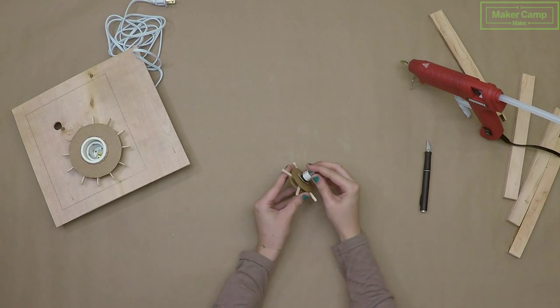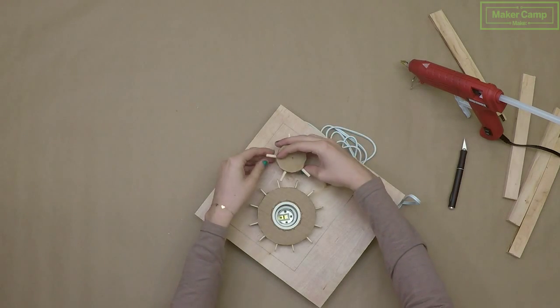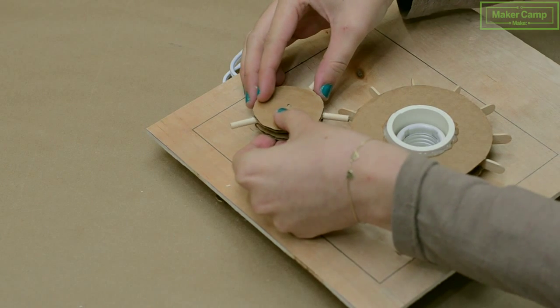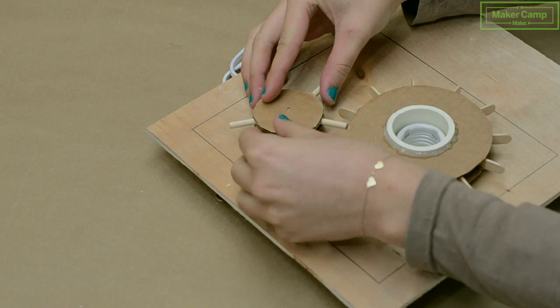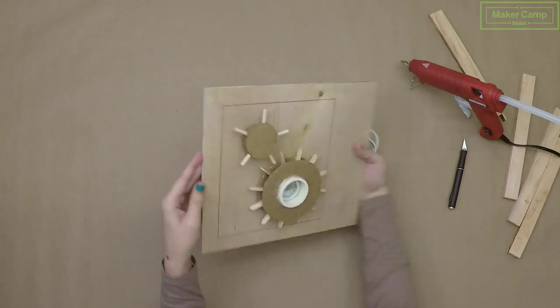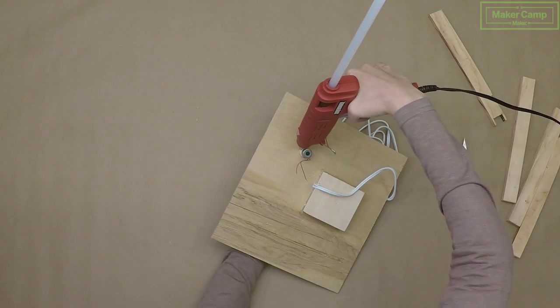Now this is the most important part of the project. Place the motor into the smaller hole on the board and make sure that the dowels line up to the center of the craft sticks. You might have to slide the motor up and down until they are centered. Once you get your motor positioned, glue it in place.